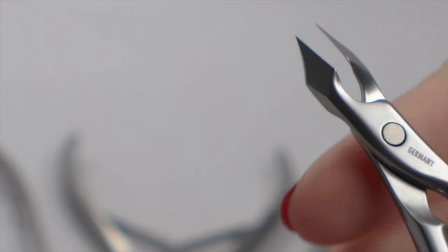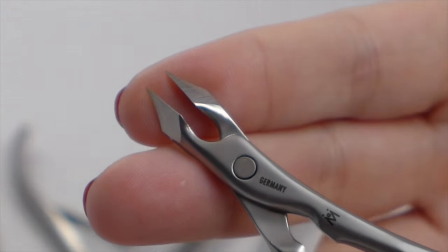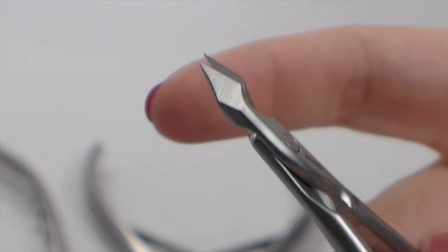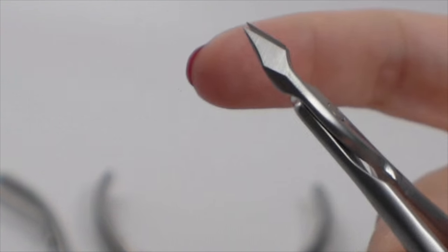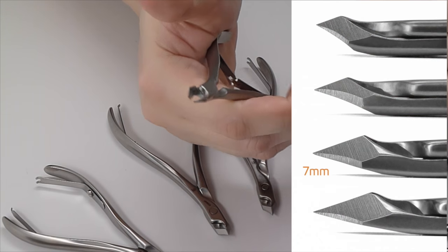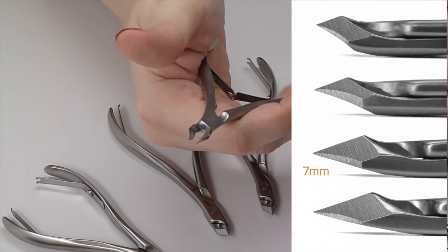Then there's the seven millimeter jaw length. This is sometimes referred to as a three-quarter jaw. Most professionals appreciate this size because the added length means it lasts through more full resharpenings so it has a nice long usable life without being unwieldy to use.